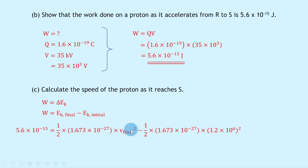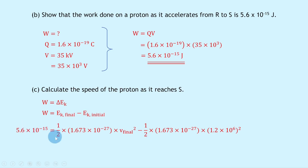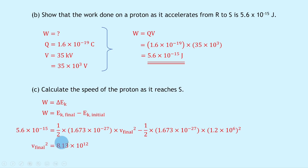We want an expression for v_final². First calculate ½ × 1.673 × 10⁻²⁷ × (1.2 × 10⁶)² and add it to the other side. Then multiply both sides by 2 and divide by the proton mass 1.673 × 10⁻²⁷. This gives v_final² = 8.13 × 10¹². Taking the square root gives v_final = 2.9 × 10⁶ meters per second.